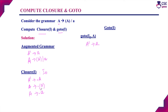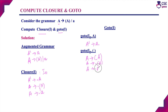Next, we need to perform a move on open bracket. That is goto(I0, open bracket): A derives open bracket dot A closed bracket. After the dot, non-terminal A is there, meaning we need to add the A productions. If after the dot any non-terminal is there in the goto operation, we need to add the non-terminal productions in closure of I. The A productions are: A derives dot open bracket A closed bracket, and A derives dot A. Now we have completed goto(I0, A) and goto(I0, open bracket).